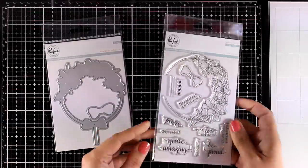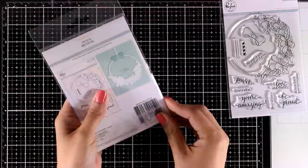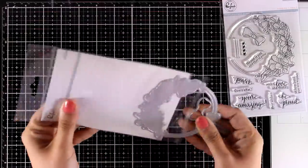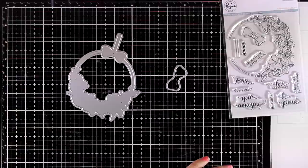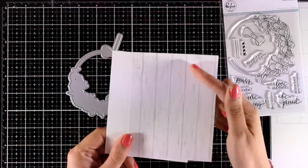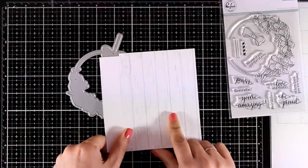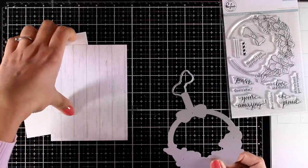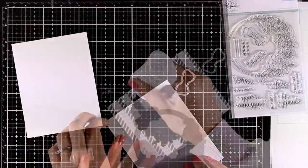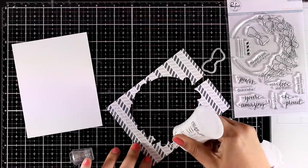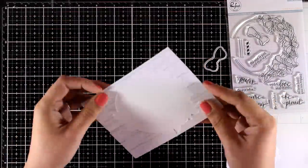For my next card I am going to use this new gorgeous stamp set which is called Hugging Florals. It has a matching die and again I am going for the inlaid technique. So I have here a piece of cardstock and a piece of pattern paper with this wood grain design. And I am going to place the die on top and run it through my die cutting machine.